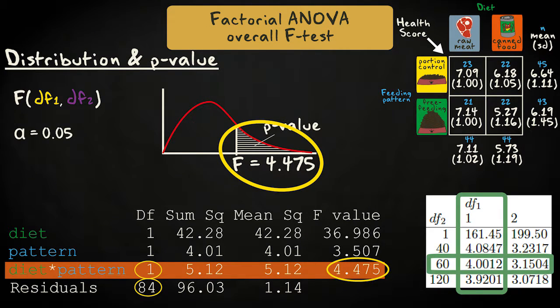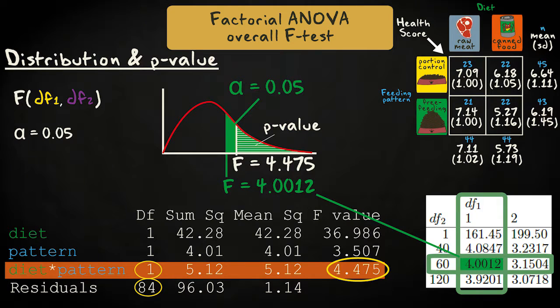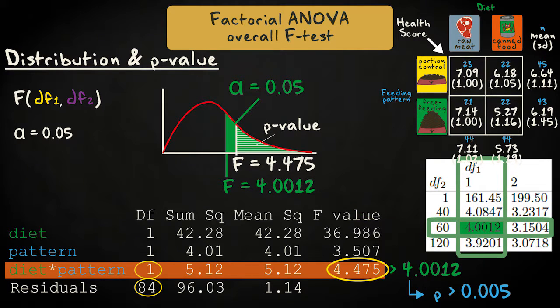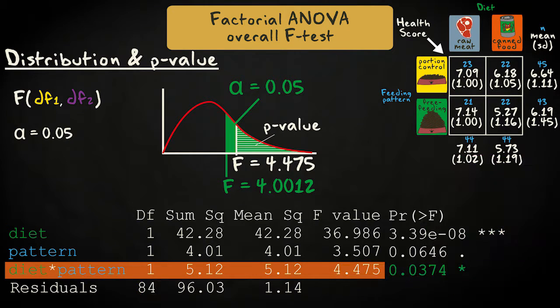We look in the right tail of the distribution. With the significance level set at 0.05, using a table, we find the critical F value with 1 and 60, rounding down from 84 degrees of freedom, is 4.0012. The observed F value exceeds this value, so we know the p-value is smaller than 0.05. Software provides an exact p-value of 0.0374. We can reject the null hypothesis and conclude that there is an interaction between diet and feeding pattern.